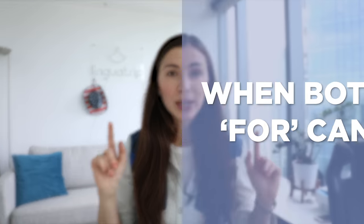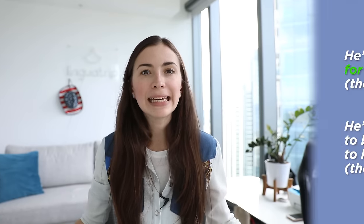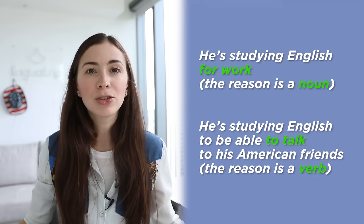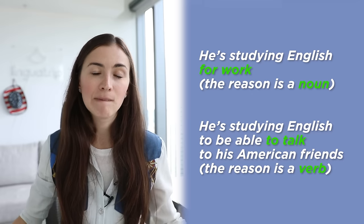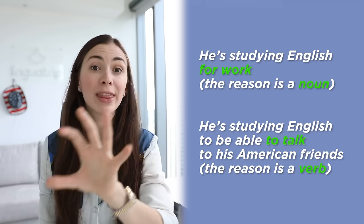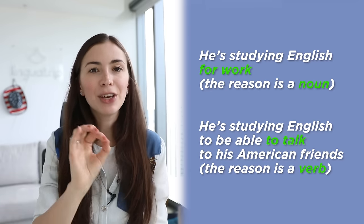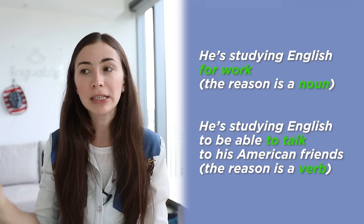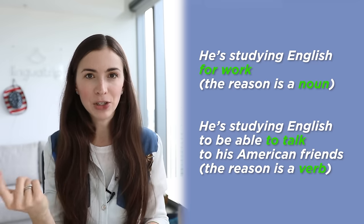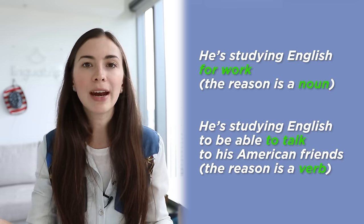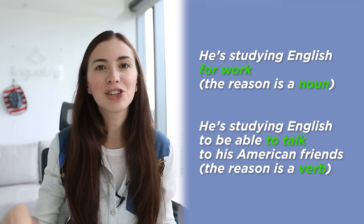There are also cases when 'to' and 'for' can both be used. He's studying English for work. He is studying English to be able to talk to his American friends. What we notice here is that we use 'for' with a noun: he learns English for fun, for work, for his master's degree. But when we have a verb, we say 'to': he learns English to talk to his friends, to get a job promotion, to study abroad.